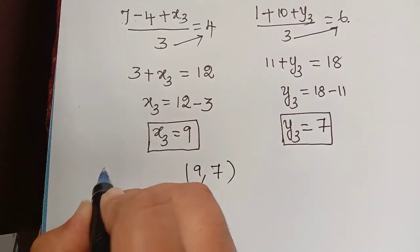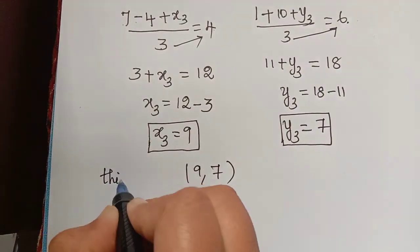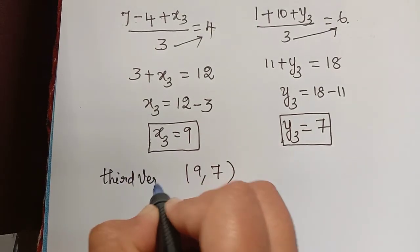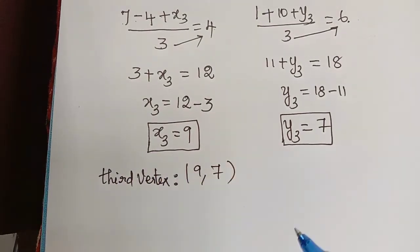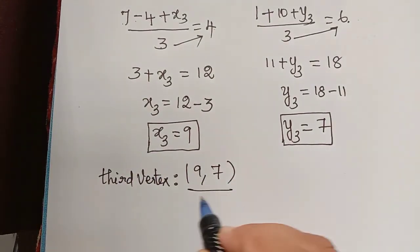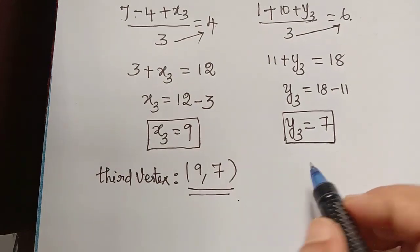So (9, 7) is the third vertex. Hope you have understood this problem. Thank you.